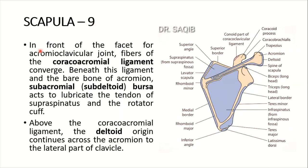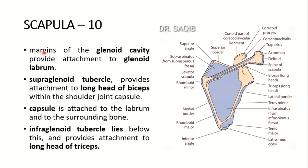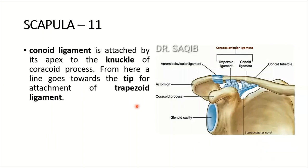In front of the facet for the acromioclavicular joint, fibers of the coracoacromial ligament converge. Beneath the ligament and the bare bone of the acromion, the subacromial or subdeltoid bursa acts to lubricate the tendon of the supraspinatus and the rotator cuff. Above the coracoacromial ligament, the deltoid origin continues across the acromion to the lateral part of the clavicle.